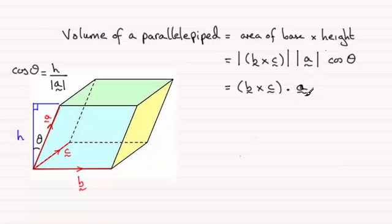And because the scalar product is commutative, I can write this as A dotted with B crossed with C. And this is known as the triple scalar product which we discussed in an earlier video.